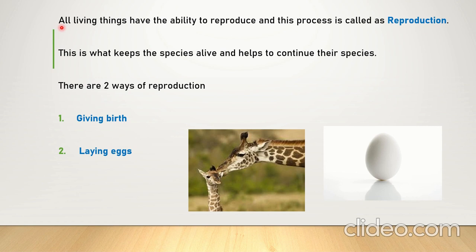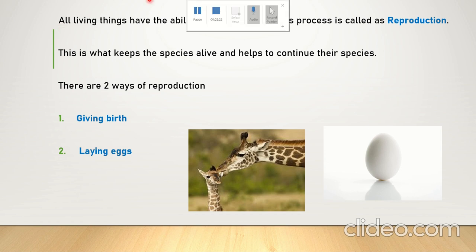All living things, even plants, have the capability of reproducing, but in this chapter we are only going to talk about animals. All animals have the ability to reproduce, and this process is called reproduction. Some animals can give birth and some animals can lay eggs. This is what keeps the species alive and continues their species.